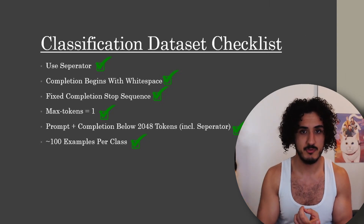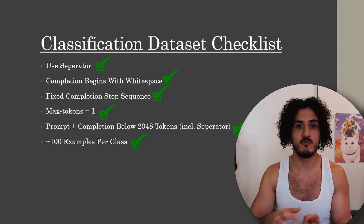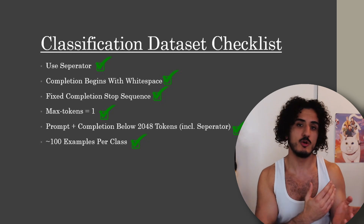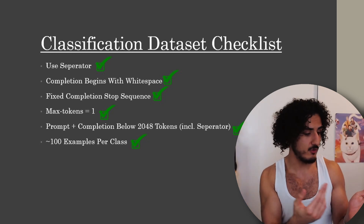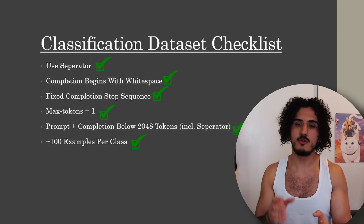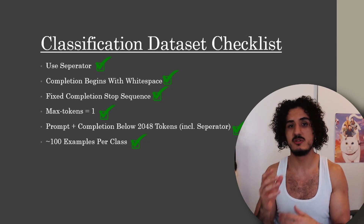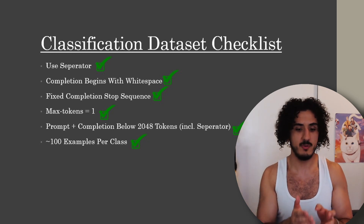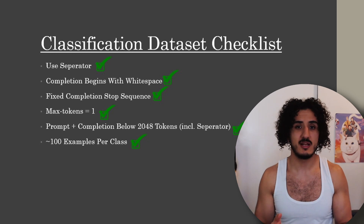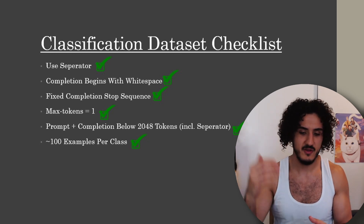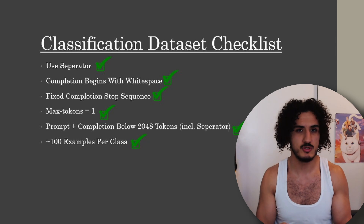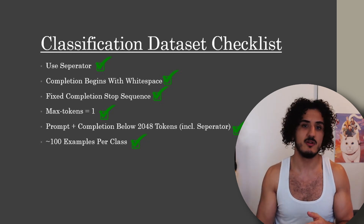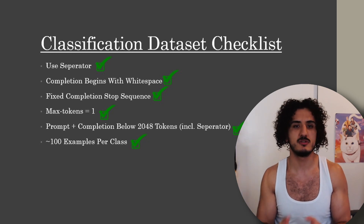A classification dataset would use a separator — a signal indicating when the prompt ends. Each completion should start with a blank space. There should be a unique identifier for when the completion ends. The unique part about a classification system is you set the max token usage to one, since it's either one class or another. Make sure prompts and completions don't exceed 2048 tokens, and you want about 100 prompt-completion pairs per class — so if you have five classes, you should have about 500 total.